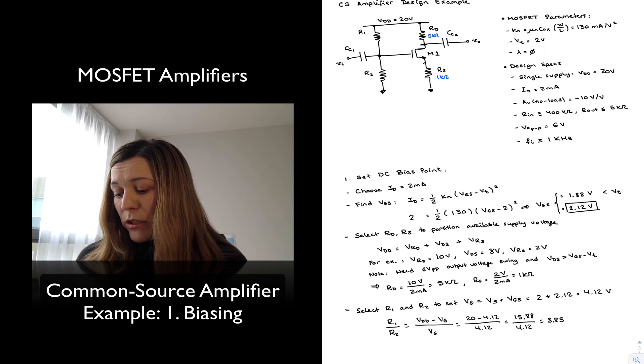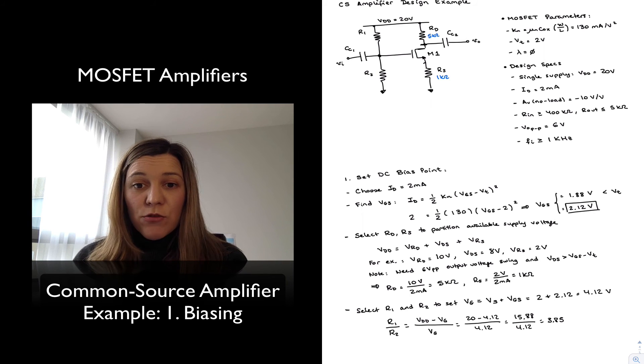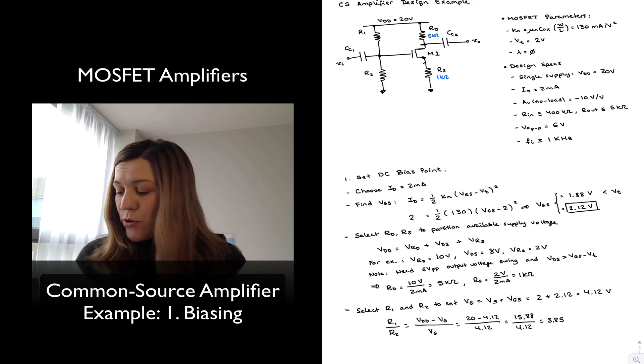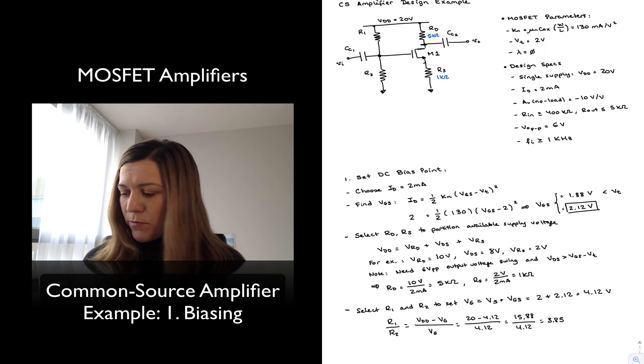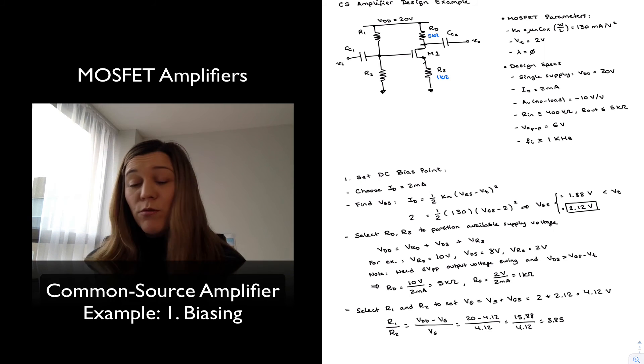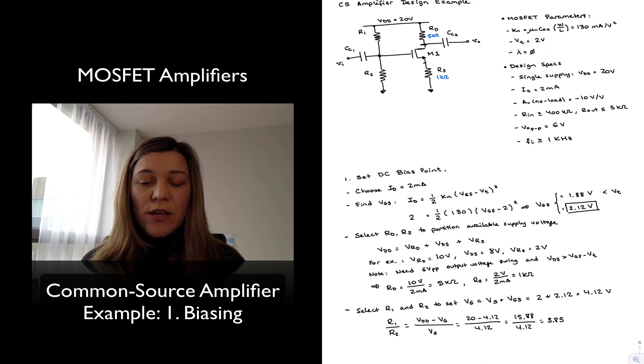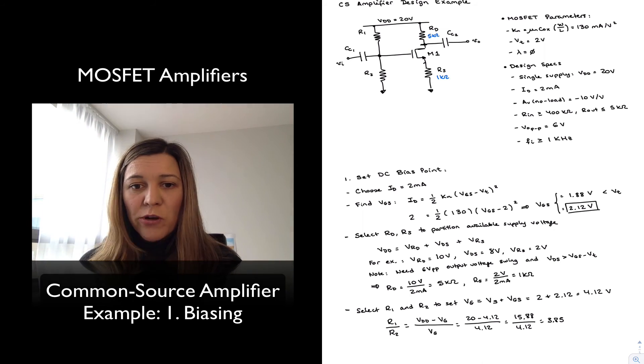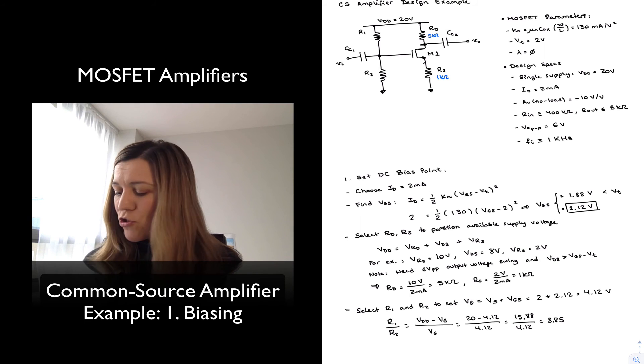Again, there are multiple values of R1 and R2 that are going to meet the specification. We want to choose high enough values that we don't have an outrageously large current flowing through R1 and R2. We don't want necessarily resistors in the ohm or 100 ohm range, but rather in the high kilo-ohm or even mega-ohm range.